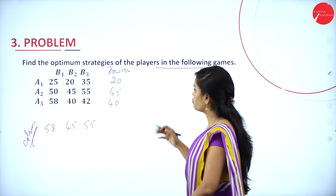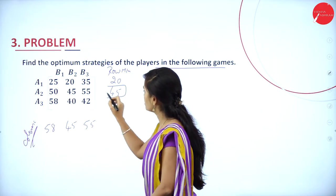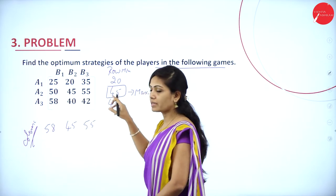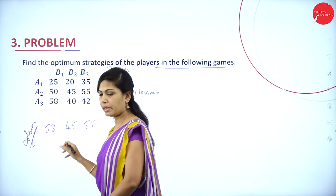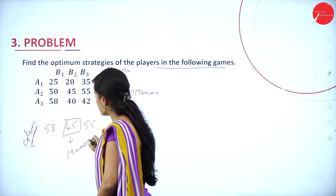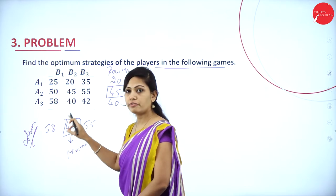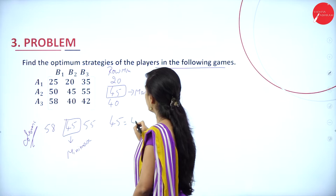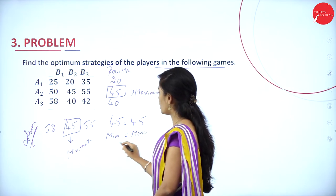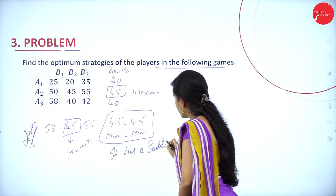Find the maximin value in row minima and the minimax value in column maxima. Among the row minima, the maximum value is 45 — this is the maximin value; player A is maximizing the game. Among the column maxima, the minimum value is 45 — this is the minimax value; player B is minimizing the maximum loss. Since maximin (45) equals minimax (45), it has a saddle point.